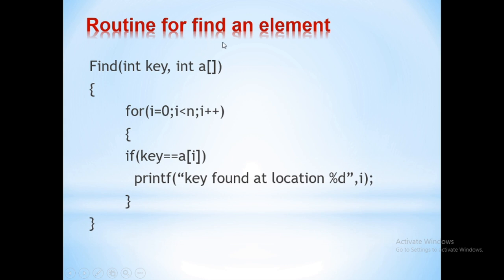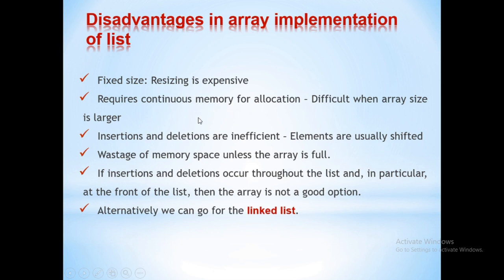Next is how to search for an element in the given list. The element to be searched is called key. We search the whole list from array index zero to n, and every time we read an element we check whether it is equal to the key value. If it is equal, we print that the element is present at that location i. This completes the implementation of the list using an array.